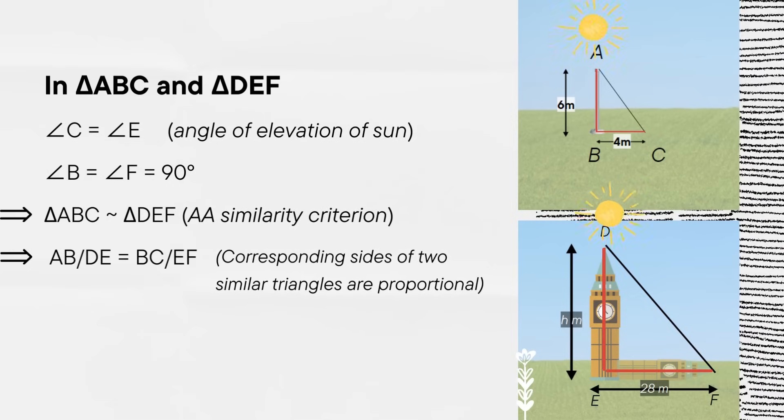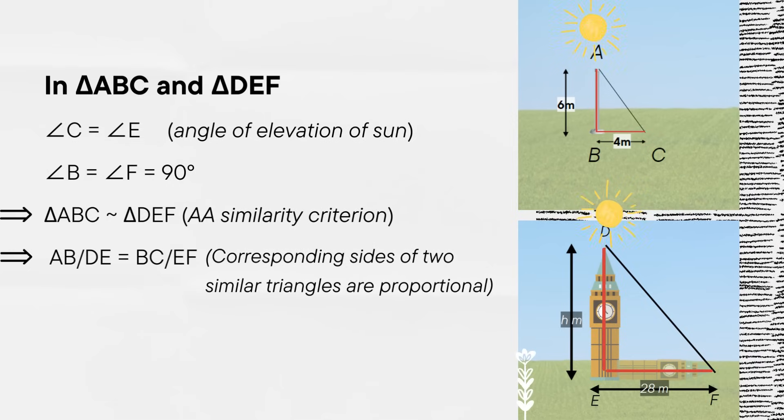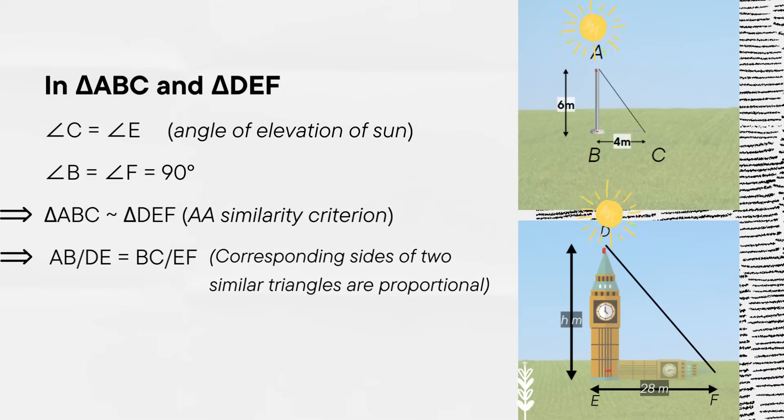Therefore, AB upon DE is equal to BC upon EF because if two triangles are similar, corresponding sides are proportional.